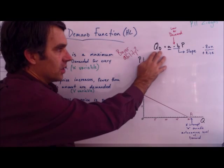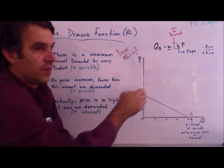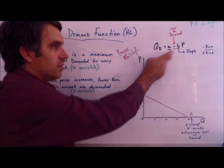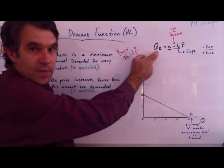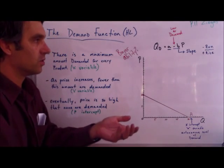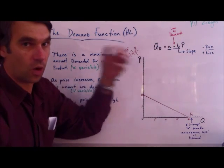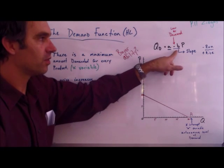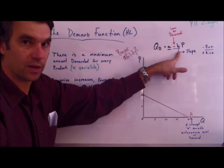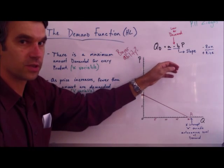The demand function — quantity demanded equals a minus bP — has four parts to it. Price and quantity demanded you already know about, and those are most often what you're going to be solving for. The two other variables are called the 'a' variable and the 'b' variable.